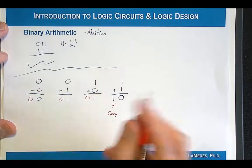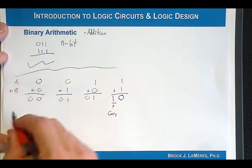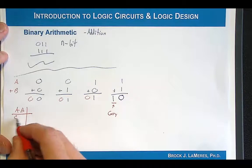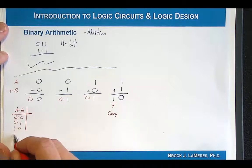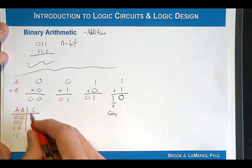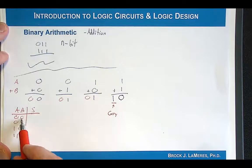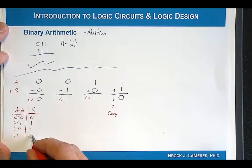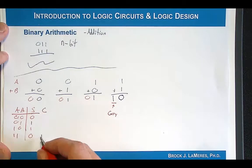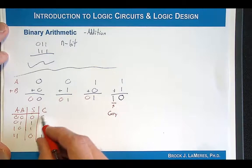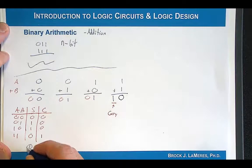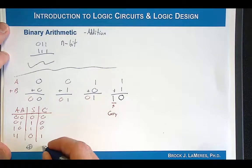If we laid that out and said we want to build a single-bit adder, we know we need a sum and a carry. What if we said it's A plus B and listed out A and B in a truth table? 0,0 gives sum 0; 0,1 gives sum 1; 1,0 gives sum 1; and 1,1 gives sum 0 with a carry, while the other cases had carry 0. If you look at this, the sum can be accomplished with an exclusive-OR gate, and the carry can be accomplished with an AND gate.